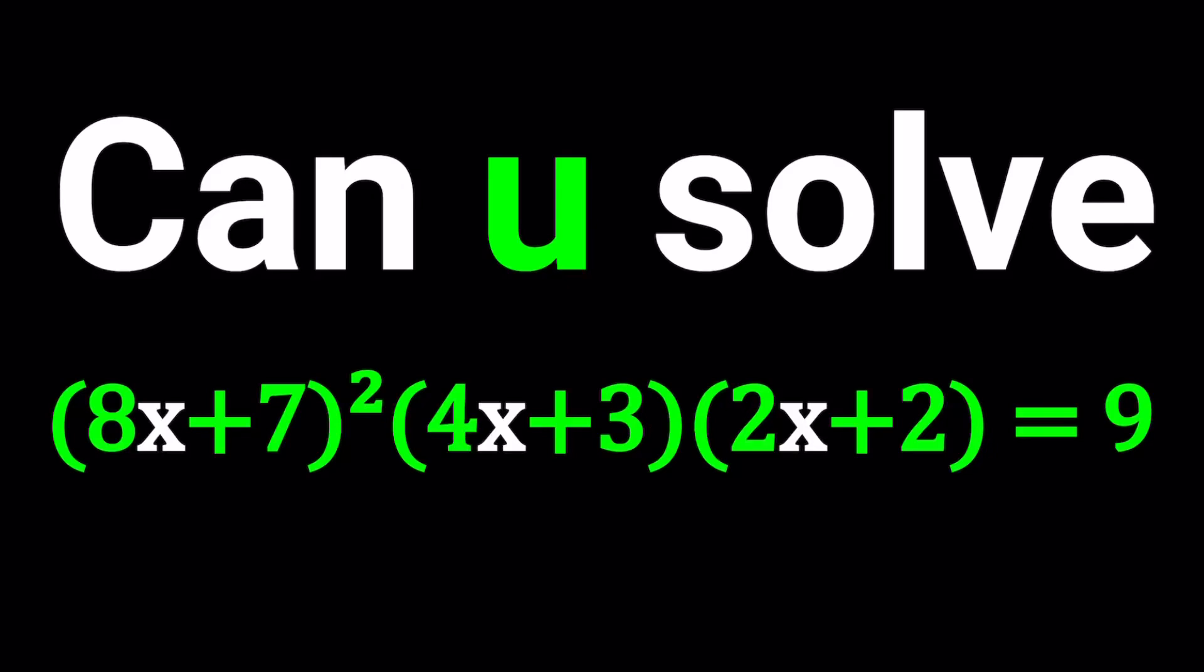Hello everyone. In this video we're going to be solving a nice polynomial equation. We have 8x plus 7 squared times 4x plus 3 times 2x plus 2 equals 9 and we're going to be solving for x values. I'll be presenting two methods and let's start with the first one.